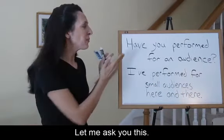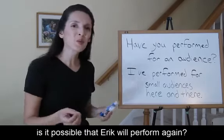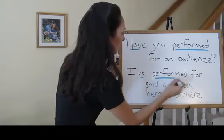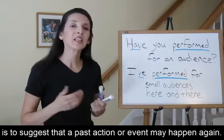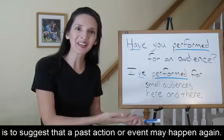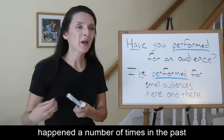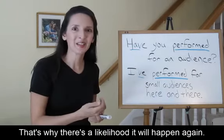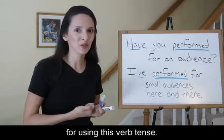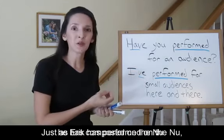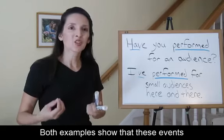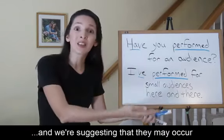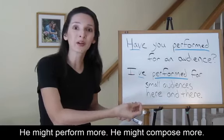Based on this question and this answer, is it possible that Eric will perform again? Yes. A second reason why we use the present perfect is to suggest that a past action or event may happen again. It's very likely that this action or event happened a number of times in the past or repeatedly in the past. That's why there's a likelihood it will happen again. Notice how there could be more than one reason for using this verb tense. Just as Eric has performed on the new, he has composed on the new. Both examples show that these events happened in the past, were not naming a specific time, and were suggesting that they may occur again in the future. He might perform more. He might compose more.